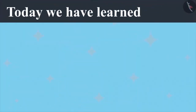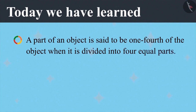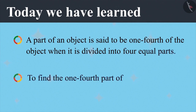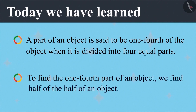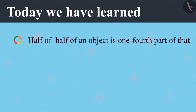Today we have learned a part of an object is said to be one-fourth when it is divided into four equal parts. To find the one-fourth part of an object, we find half of the half of an object. We can also say that half of half of an object is one-fourth of that object.